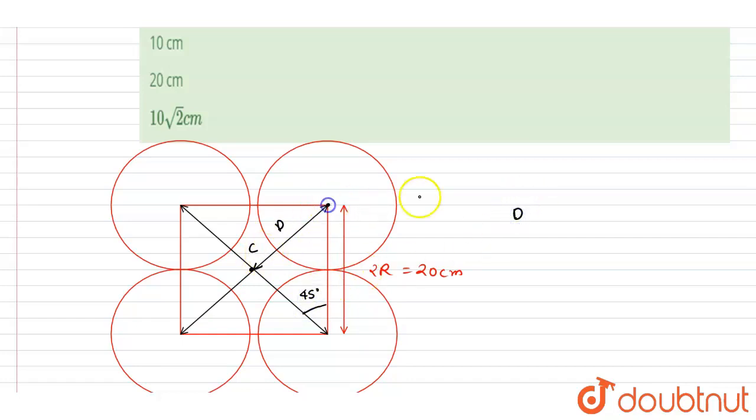cos 45. So if you put the value, 20 by root 2, it is 10 root 2 centimeters. This will be the distance that is asked in the question, the center of mass distance of the four spheres from the center of either sphere.